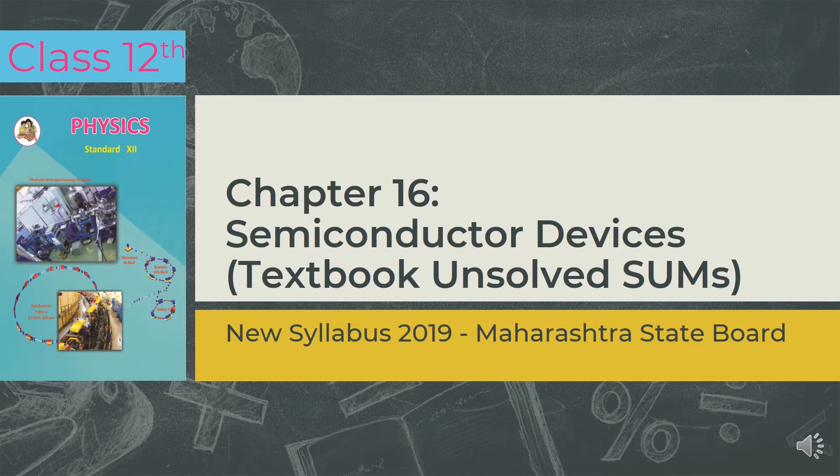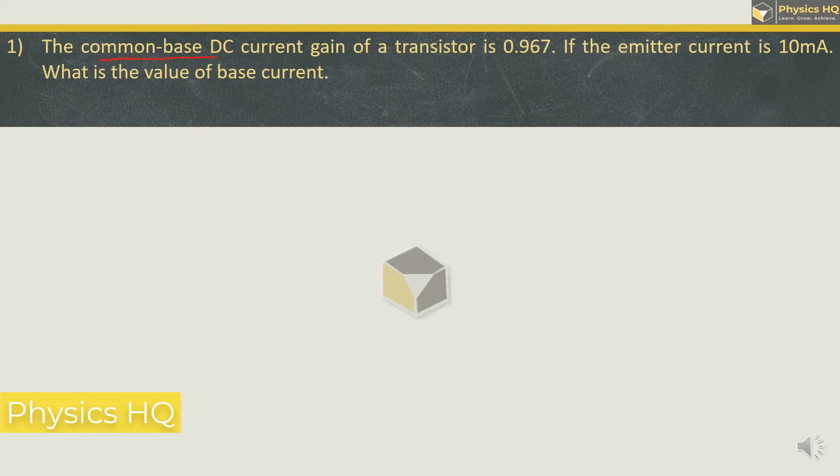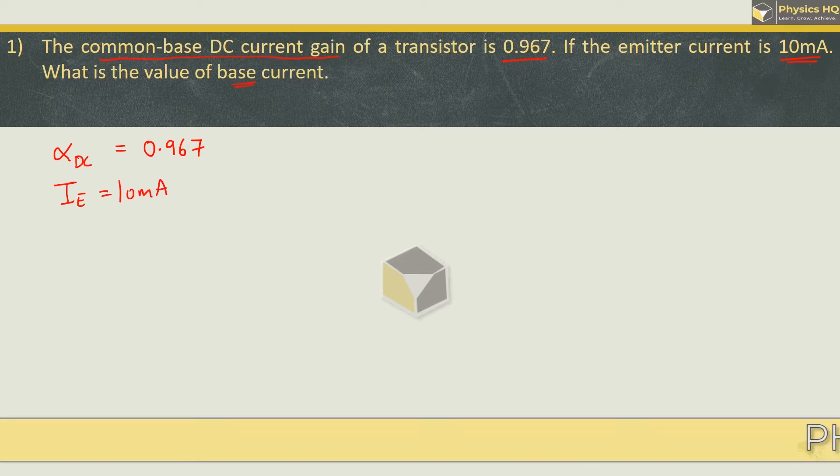Let us start with the first sum. The common base DC current gain of a transistor is 0.967. If the emitter current is 10 mA, what is the value of base current? So what they have given is alpha DC, which is 0.967, and emitter current which is 10 mA. They have asked for the base current value.